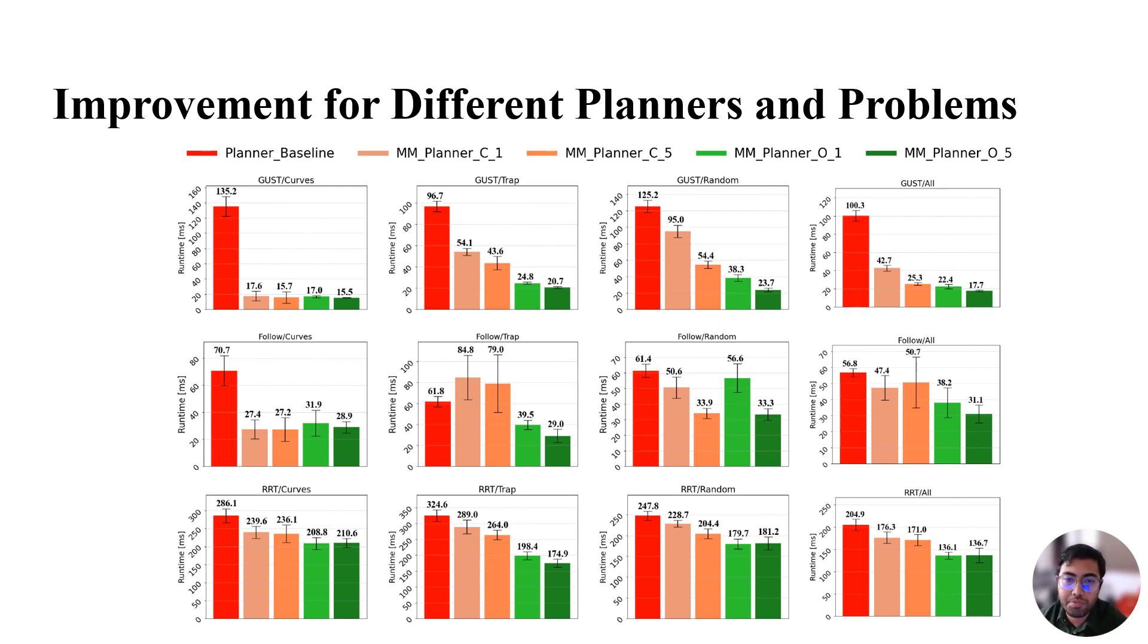Comparing the first three columns, motion memory can achieve the most significant improvement for curves environments with GUST and FMT while RRT enjoys the most motion memory benefits in the trap environments.